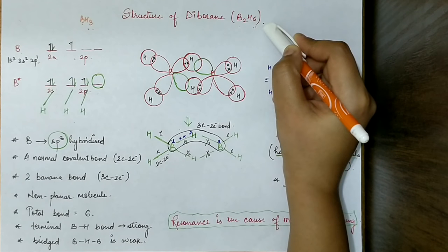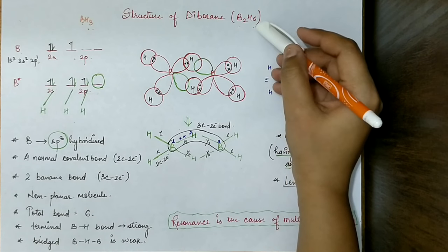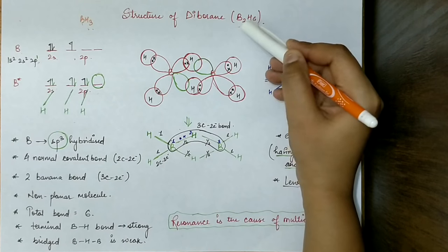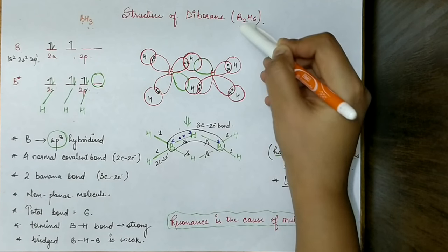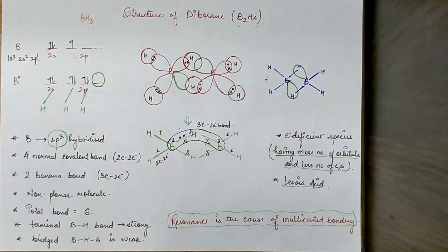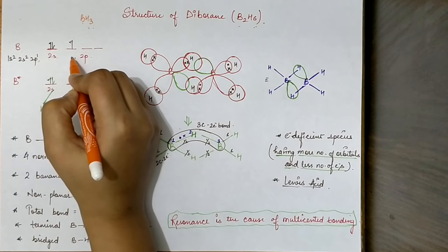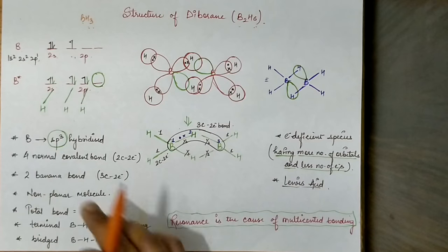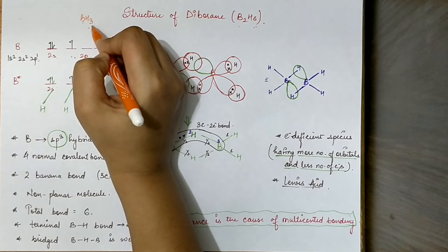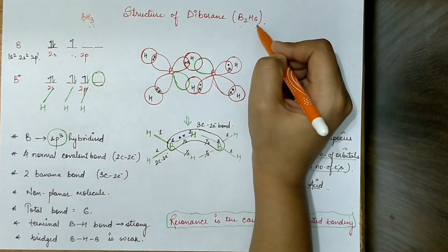The reason this topic is important: if you look at the boron atom, it belongs to Group 13, and it has just three valence shell electrons. So it will generally form three bonds. If we need to make its hydride, it should form a BH3 molecule.